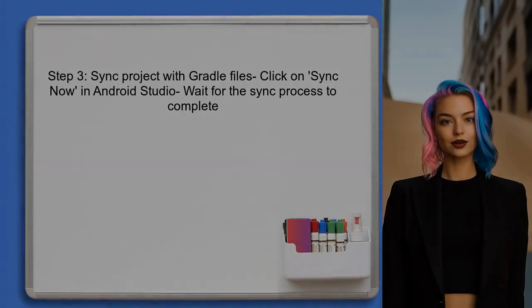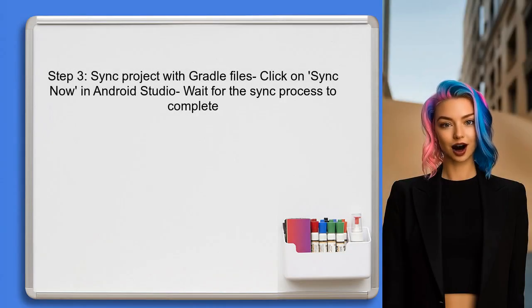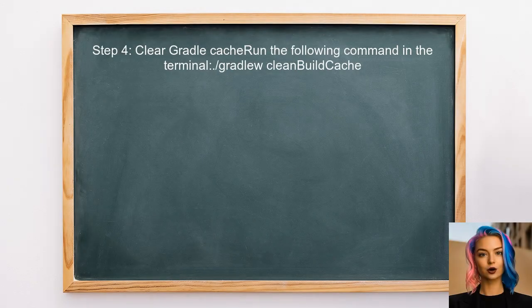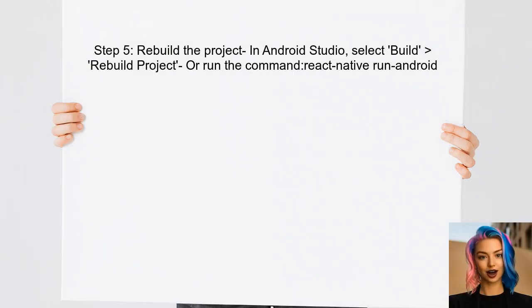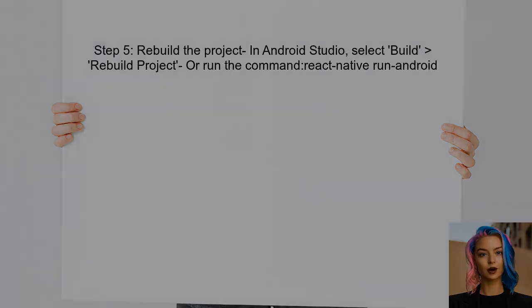After updating the build.gradle file, sync the project with Gradle files — this step is essential to apply the changes made. If the error persists, try clearing the Gradle cache, which can help resolve any lingering issues with dependencies. Finally, rebuild the project to ensure all changes take effect. This can be done through Android Studio or by using the command line.